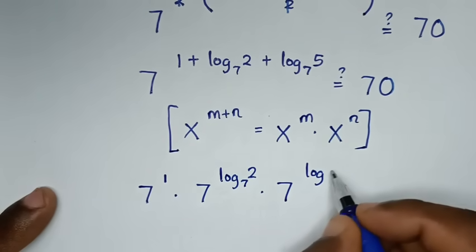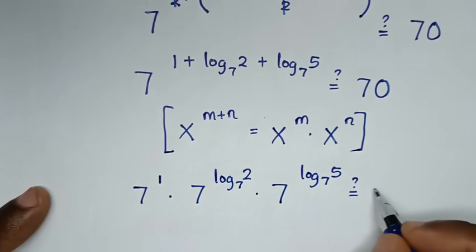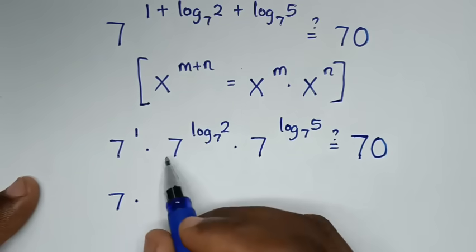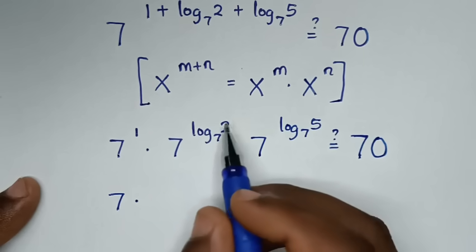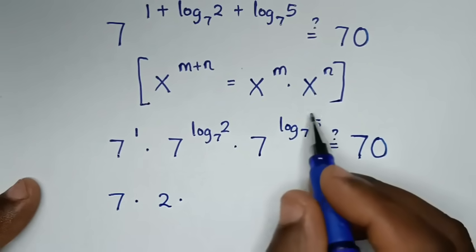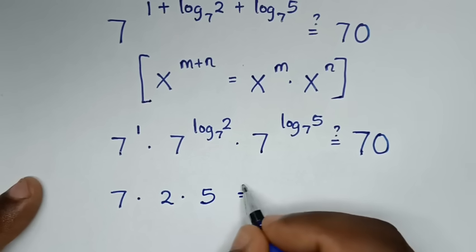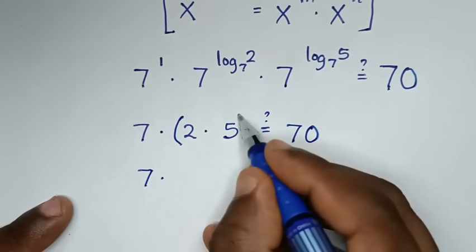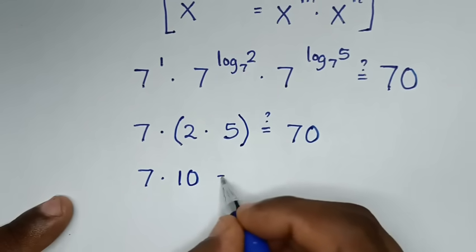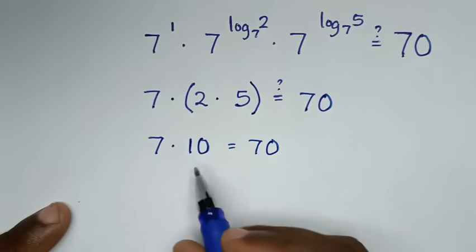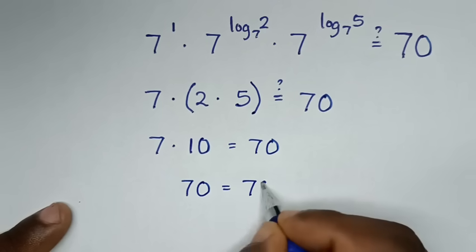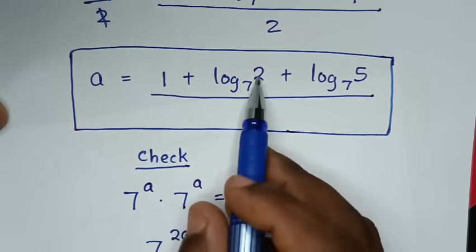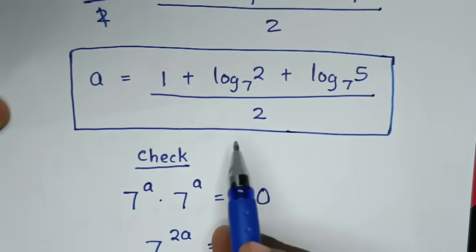Is it equal to 70? Then 7^1 is 7; 7 power of log base 7 of 2 is the same as 2; and 7 power of log base 7 of 5 is the same as 5. So it will be 7 times 2 times 5 — multiplying 2 times 5 gives 10 — so 7 times 10 equals 70. Left side and right side are equal, so it is true. The value of A is 1 plus log base 7 of 2 plus log base 7 of 5, over 2, which is the simplest form.